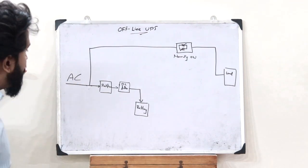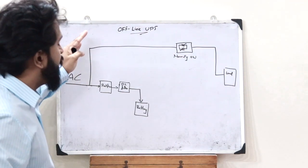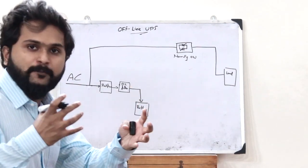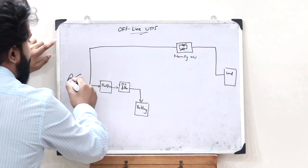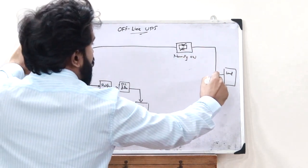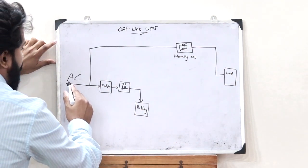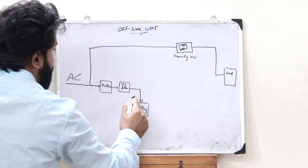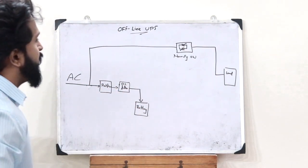So this is the case when there is a main voltage supply: on one side, this AC current is directly connected to the load, and on the other side, this is converted to DC and stored inside the battery.